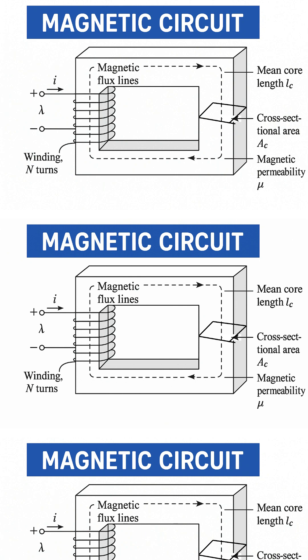The core has a certain length, labeled as LC, and a cross-sectional area, labeled as AC. These dimensions affect how easily magnetic flux flows through the core.